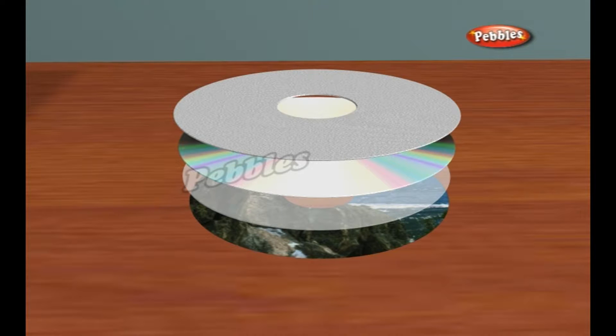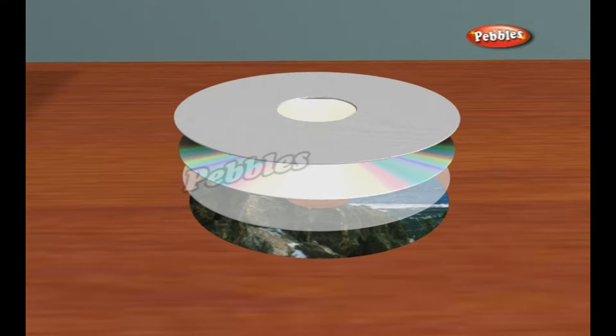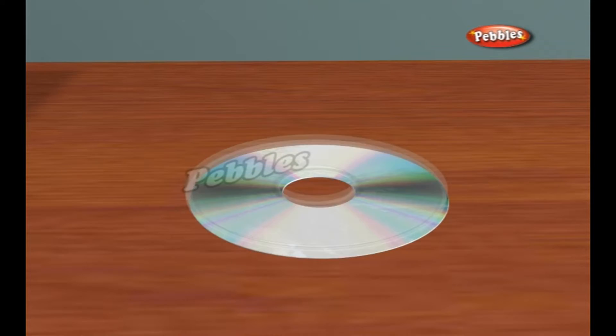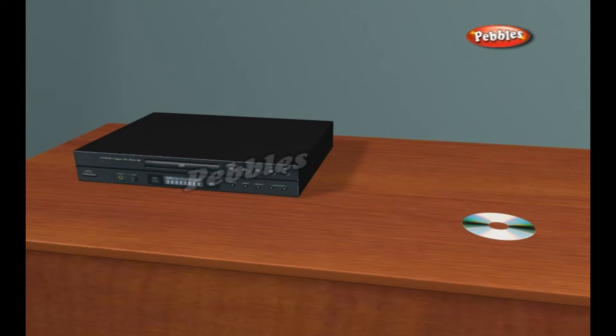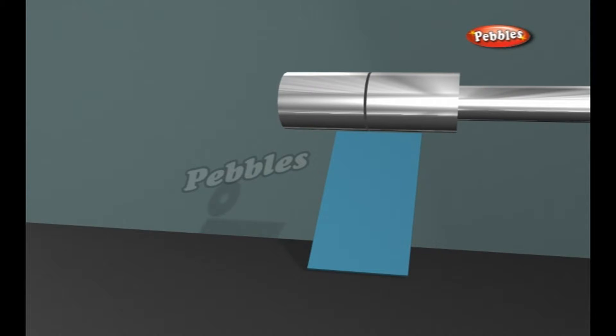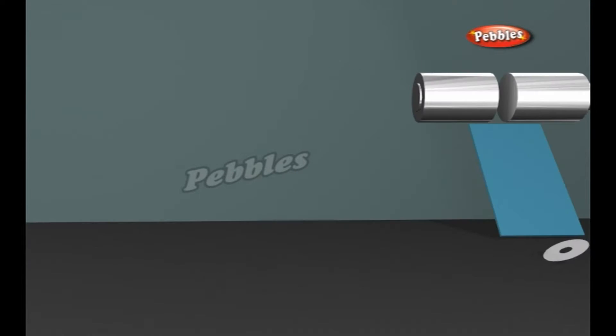A reflective layer reflects the laser back, and a lacquer layer is used to prevent oxidation. Artwork is screen printed on the top of the disc. A laser beam reads the polycarbonate disc, is reflected back, and read by the player. Most of a CD consists of an injection-molded piece of clear polycarbonate plastic.